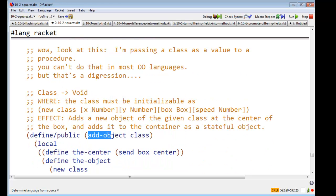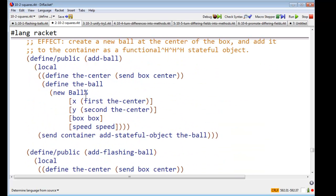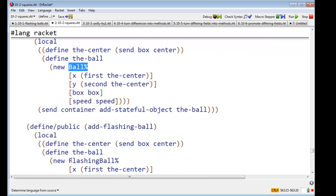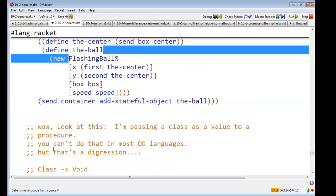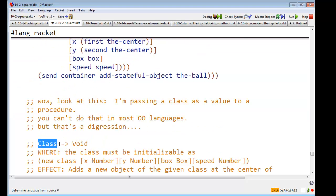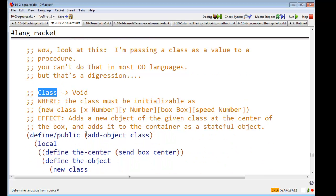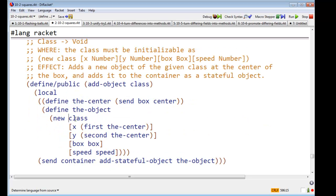So I'm going to write a function called add-object-class. The only difference between add-ball and add-flashing-ball is the name of the class. And in racket, classes are ordinary values. We defined them with define. That means they're ordinary values. So I can pass a class as an object, as a value, as an argument to a function.